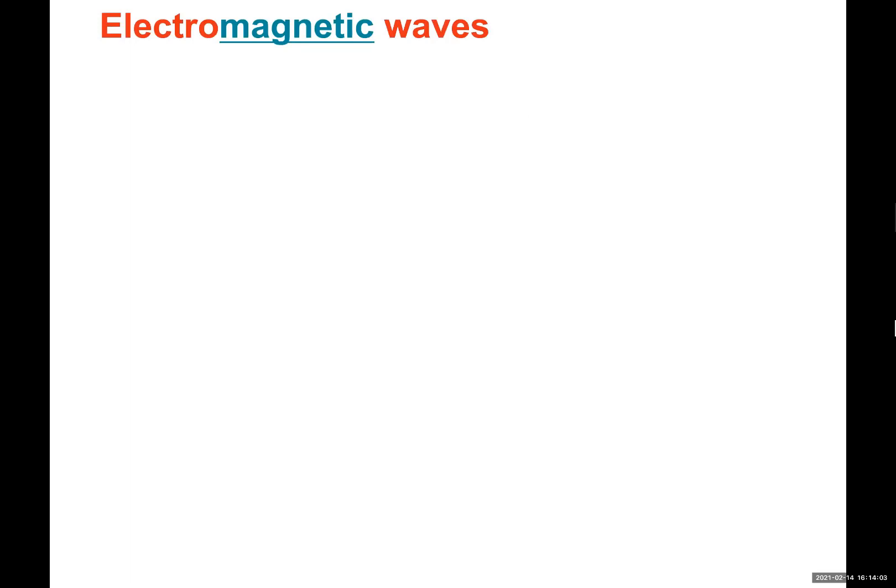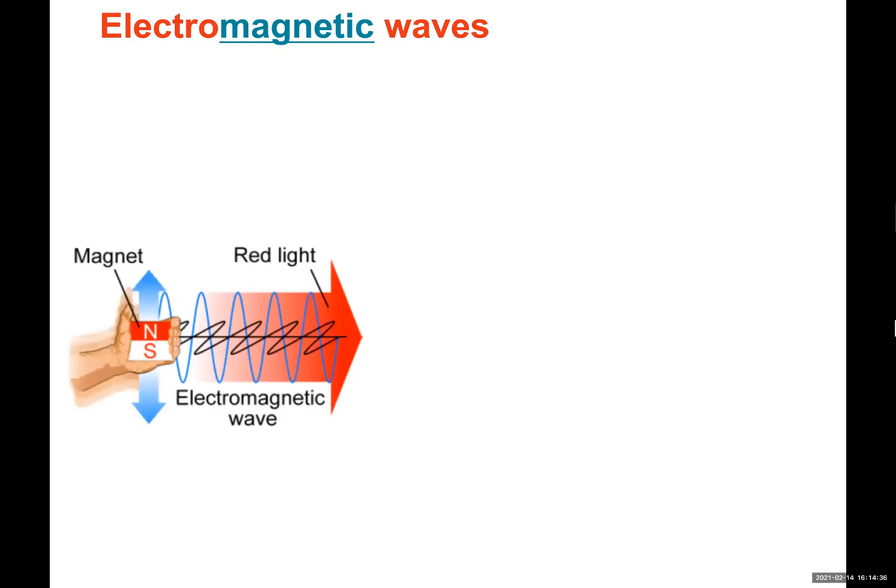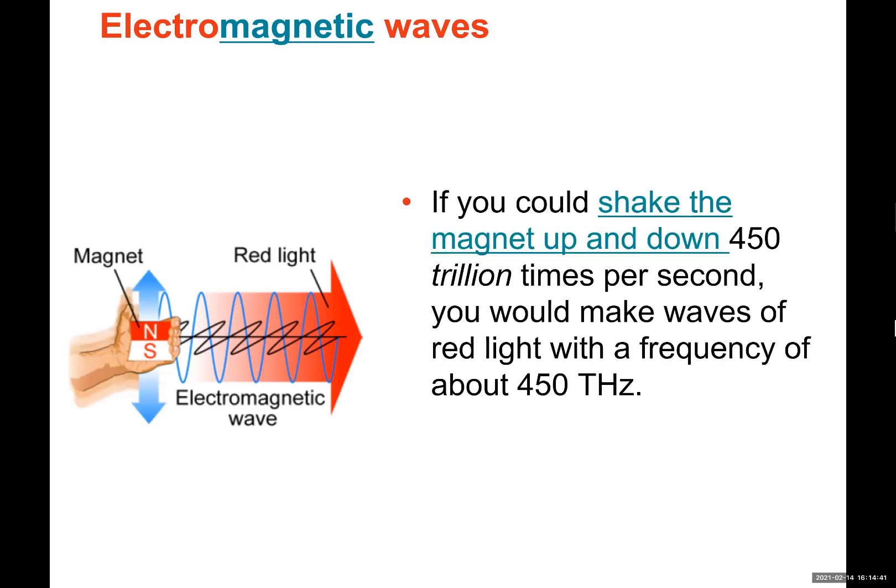Another definition of light was defined as electromagnetic waves. I already showed you demonstrations before that if you have a charged particle moving, a moving charged particle is going to produce a magnetic field.